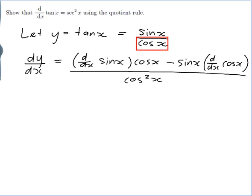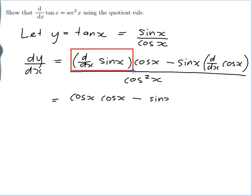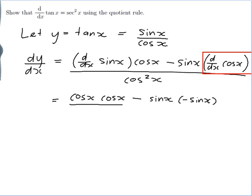Okay, let's figure out what each of these are. d/dx of sin x is cos x. And also d/dx of cos x is minus sin x. And I haven't changed the bottom line. Alright.